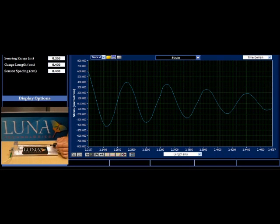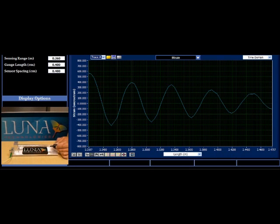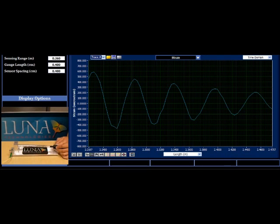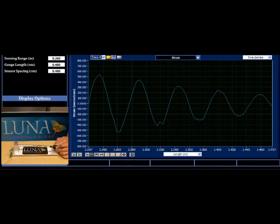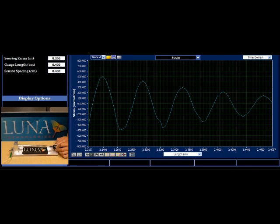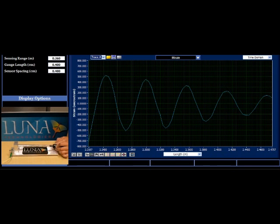Now, I am moving the tip of the cylinder in a circle, and we see the phase of the sinusoid vary. Notice in the top left, we are observing 26 centimeters of fiber with a 4 millimeter gauge length and a 4 millimeter sensor spacing.